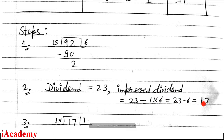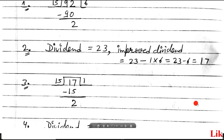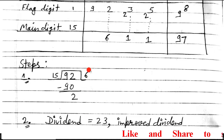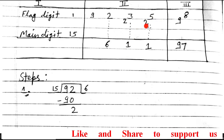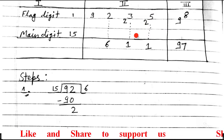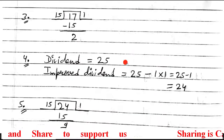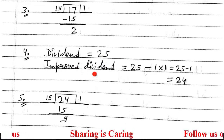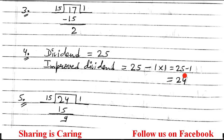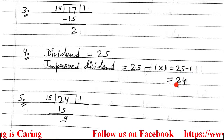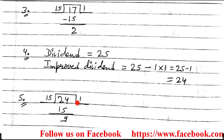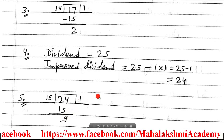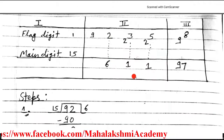Divide 17 by 15: 15×1=15, remainder 2. Enter quotient 1 and remainder 2 in the table. Next dividend is 25. Improved dividend: 25 minus 1×1 = 24. Since it is positive, divide. 24 divided by 15: 15×1=15, remainder 9. Enter quotient 1 and remainder 9 in the table.